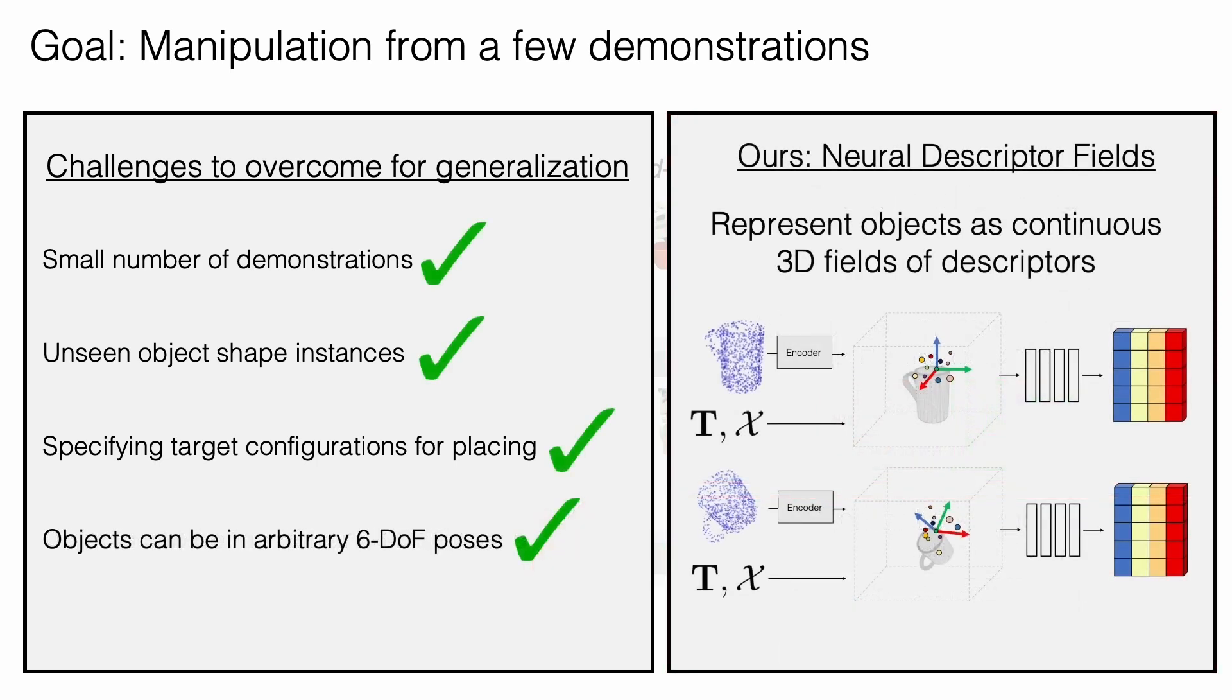We propose neural descriptor fields, a novel representation that models objects as continuous 3D fields of descriptors, and enables us to overcome the full set of these challenges.